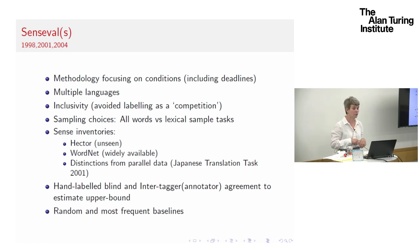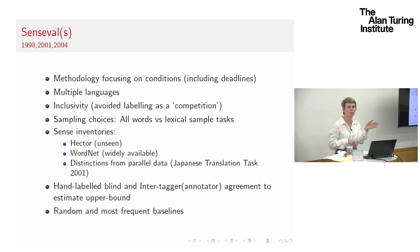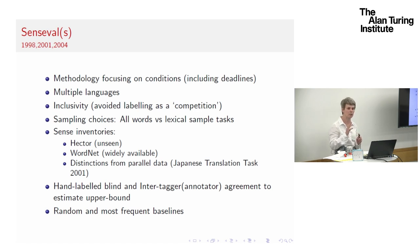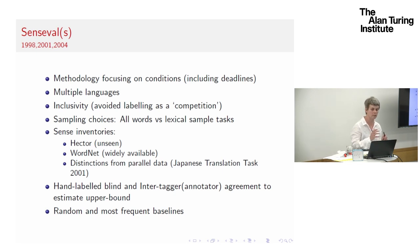The methodology involved hand-labelling the data blind — the annotators couldn't see what one another was putting, and then an adjudicator would compare the verdicts and decide the correct choice. We then have an estimate of the upper bound — for WordNet senses it was something like 78% agreement, though it varies depending on the inventory and the choice of lexical items. And then we had random baselines and the most-frequent-sense heuristic.